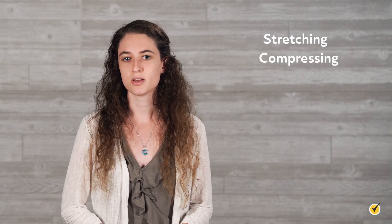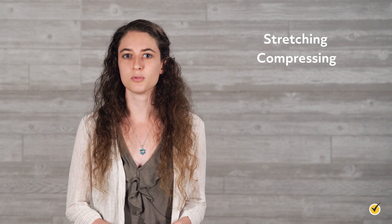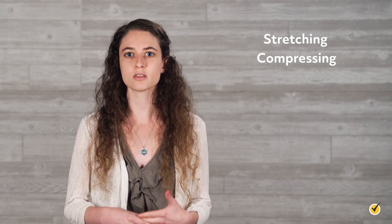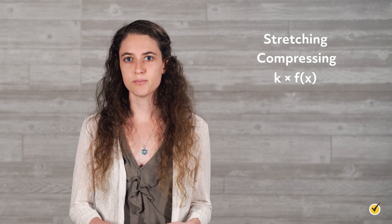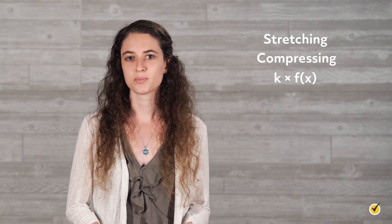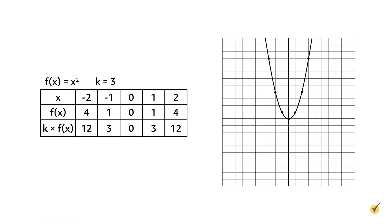Another way to manipulate the graph of functions is by stretching or compressing them. Vertical stretching happens when the function as a whole gets multiplied by a constant k greater than 1, using the formula k times f(x). Let's stretch the function f(x) equals x squared vertically by the constant k equals 3. The original function is shown as a solid line on the coordinate plane. When multiplied by 3, the graph stretches vertically, appearing as a dashed line. A graph is stretched vertically when the y-coordinates are multiplied by a value greater than 1.